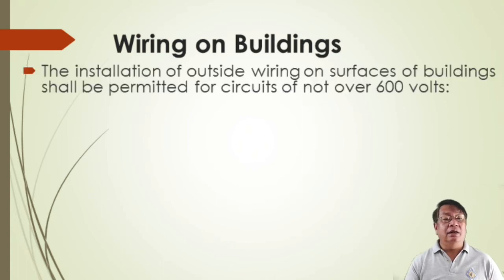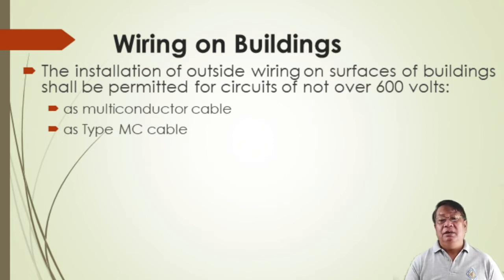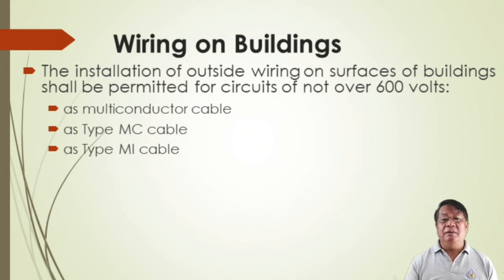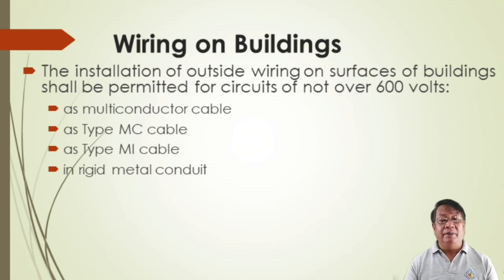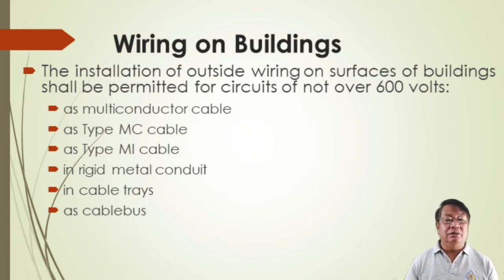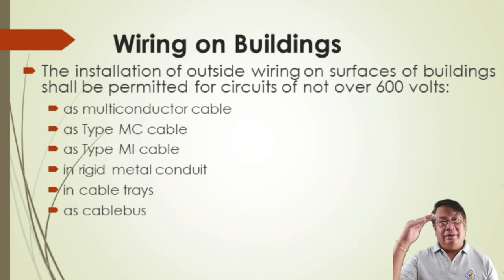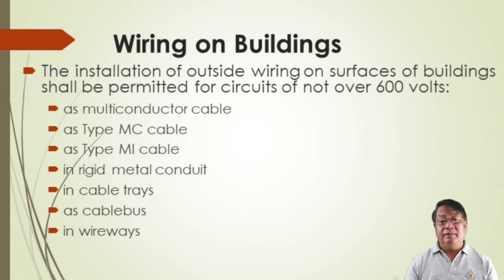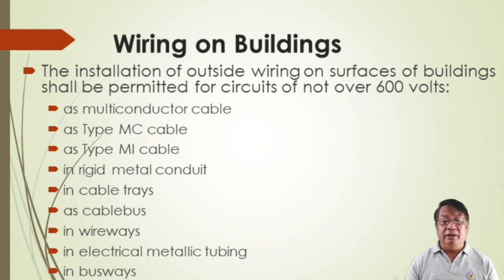Permitted wiring methods include all multi-conductor cables, Type MC metallic sheath cable, Type MI cable, rigid metallic conduit, cable trays, cable bus, wireways, electric metallic tubing, and busways. The installation could be below ground, at surface level, or above using cable trays.